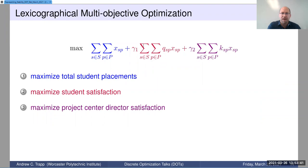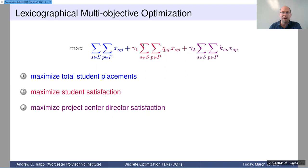Coming back to the WPI-specific context: our problem cares about maximizing total student placements — that's the primary objective in blue — student satisfaction or utility in red, and project center director satisfaction in purple, which is tertiary. All three are handled in a lexicographic manner. We choose gamma_1 and gamma_2 coefficients so that one incremental contribution to the first objective component is always better than anything achievable in the second or third components — truly primary, secondary, and tertiary.